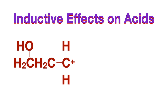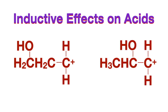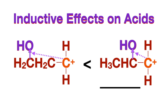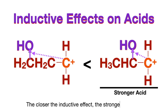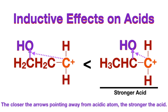Here are two Lewis acids to compare, where the positively charged carbon on each of them is the acidic atom. They both have hydroxyl groups — oxygen is more electronegative than the carbon, so it has a withdrawing effect away from the positively charged carbon. But on the right side, the hydroxyl is closer to the acidic atom, which means it will have a stronger withdrawing effect of electrons away from the positively charged carbon, making it a stronger acid. So the closer the inductive effect of the electronegative group to the acidic atom, the stronger the acid. Or you could say the closer the arrow is pointing away from the acidic atom, the stronger the acid.